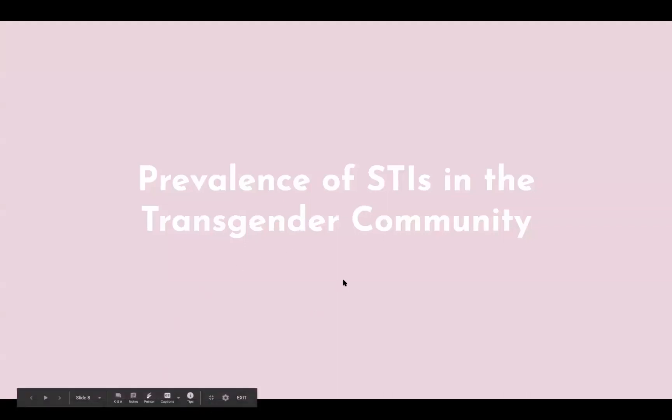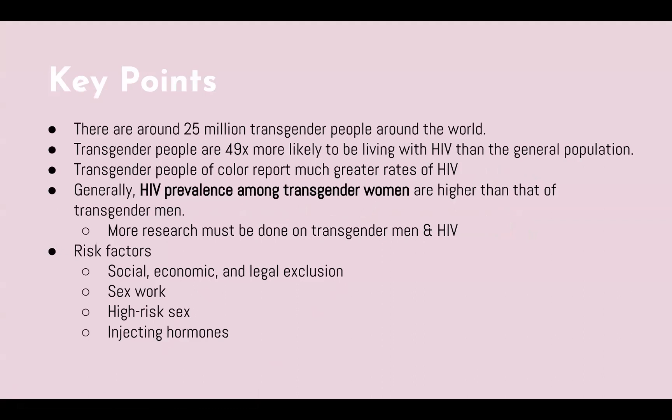My name is Maureen Grace Buendia and I'm going to be going over the prevalence of STIs in the transgender community. There are around 25 million transgender people in the world, and transgender people are 49 times more likely to be living with HIV than the general population. Transgender people of color are much more likely to report greater rates of HIV. Generally, HIV prevalence among transgender women is higher than that of transgender men, but more research must be done on transgender men and HIV. Risk factors associated with HIV in the transgender population include social, economic, and legal exclusion; sex work; high-risk sexual behaviors; and injecting hormones.